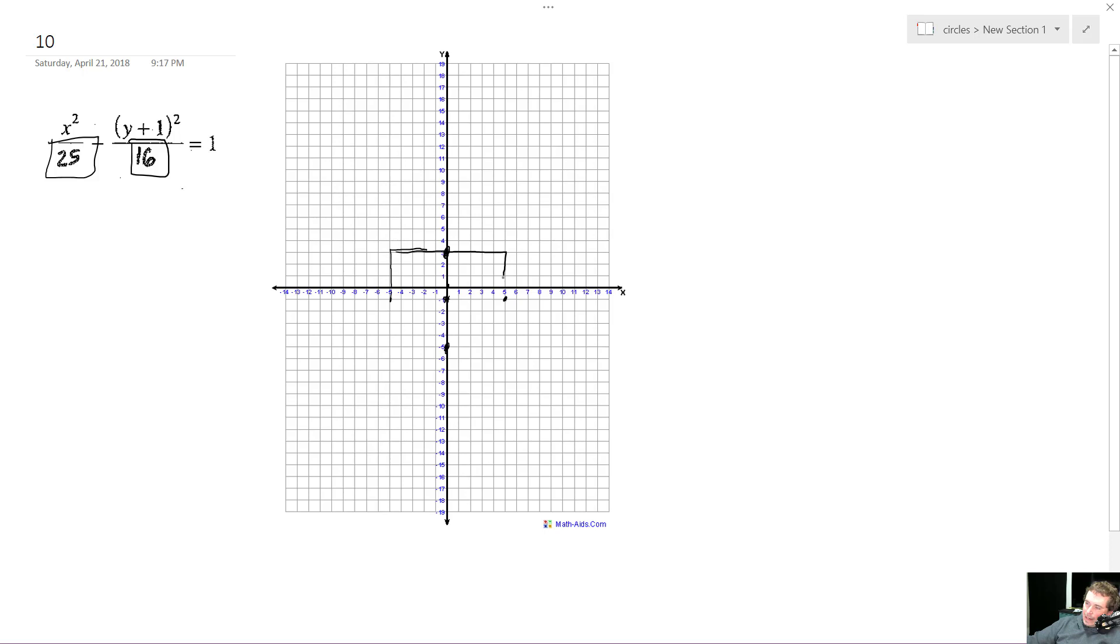And then what we do is we draw diagonals through the boxes, and the reason we do that is because it helps guide our hyperbola. So kind of like, right here, just something like that.